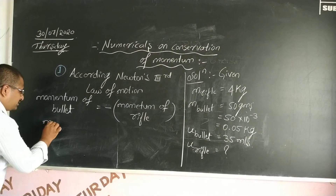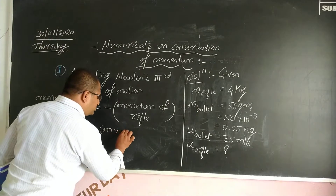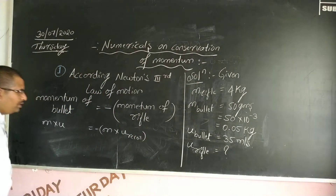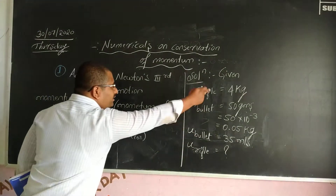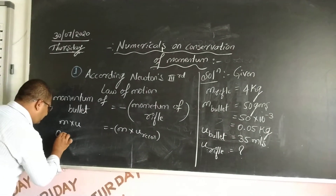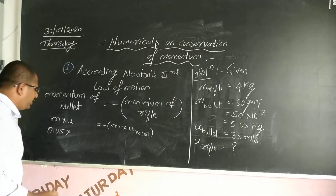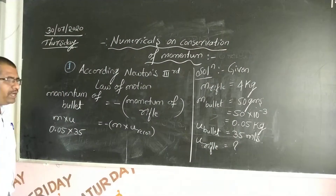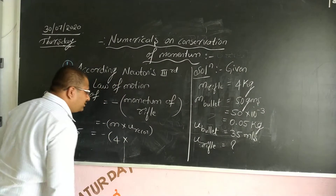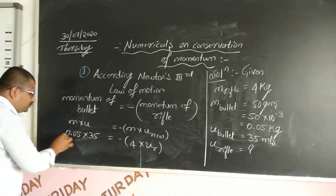The negative sign indicates the opposite direction. So we write: mass × initial velocity of the bullet = 0.05 kg × 35 m/s. This is equal to minus the bracket of mass of the rifle, 4 kg, multiplied by the initial velocity of the rifle, which is to be calculated.